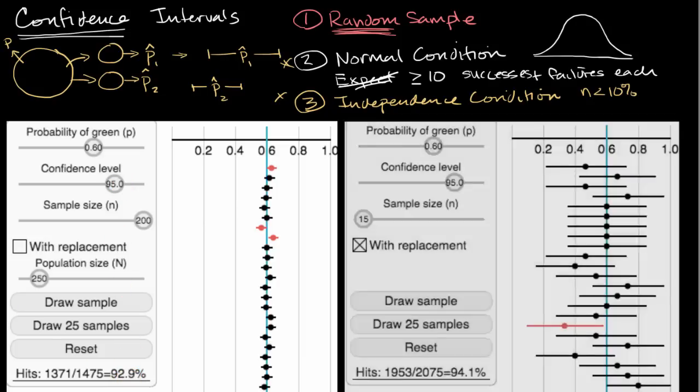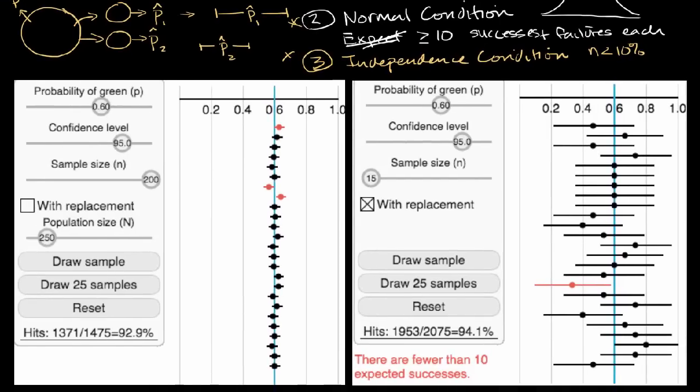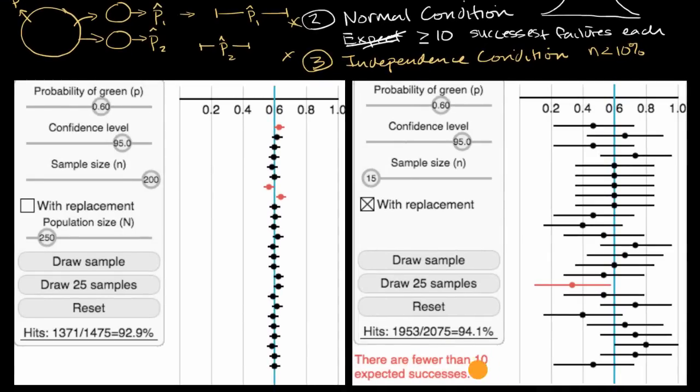Similarly, we can look at a situation where our normal condition breaks down. And our normal condition, we can see here that our sample size right here is 15. And actually, if I scroll down a little bit, you can see that the simulation even warns me. There are fewer than 10 expected successes. And you can see that when I do, once again, I did a bunch of samples here. I did over 2,000 samples.